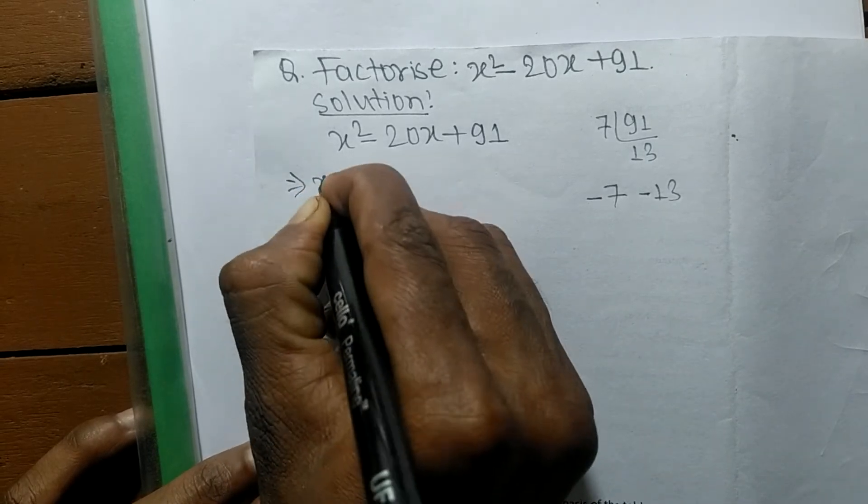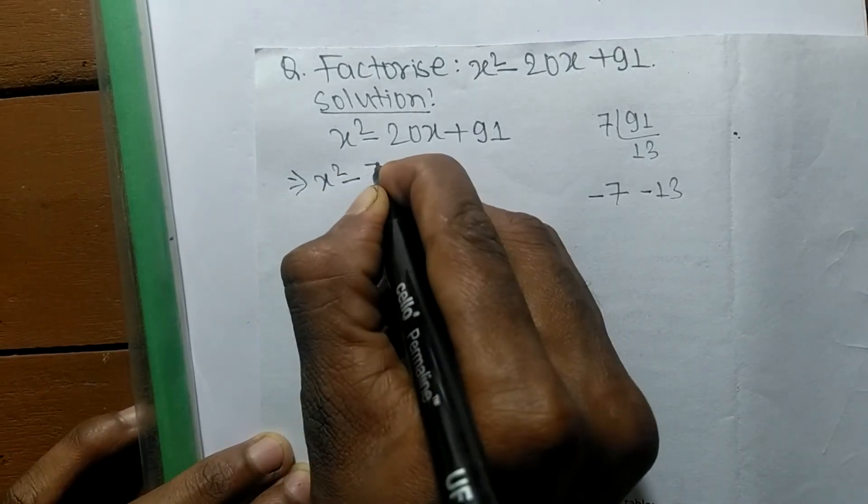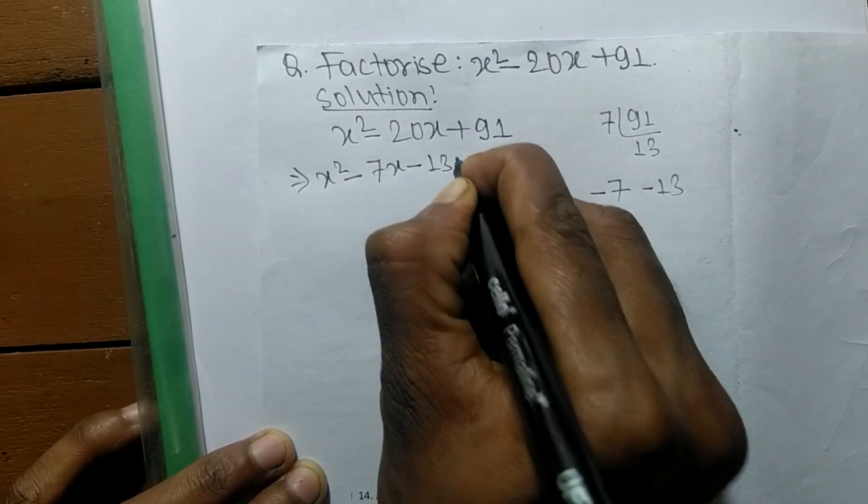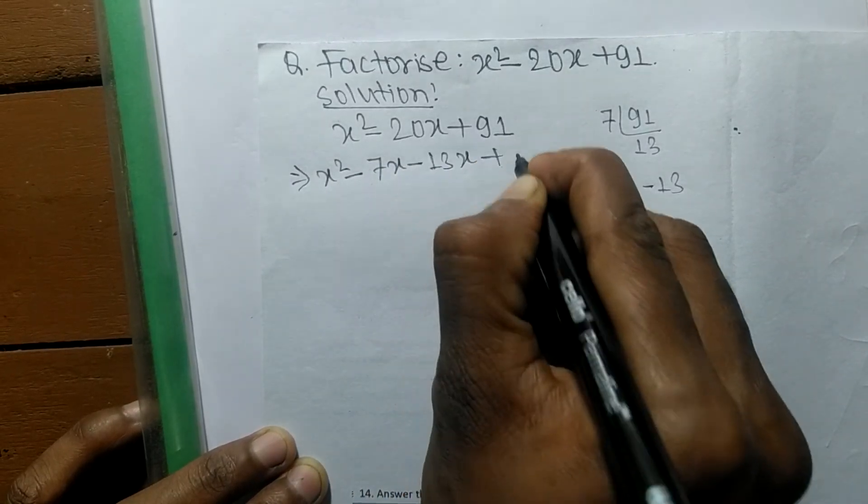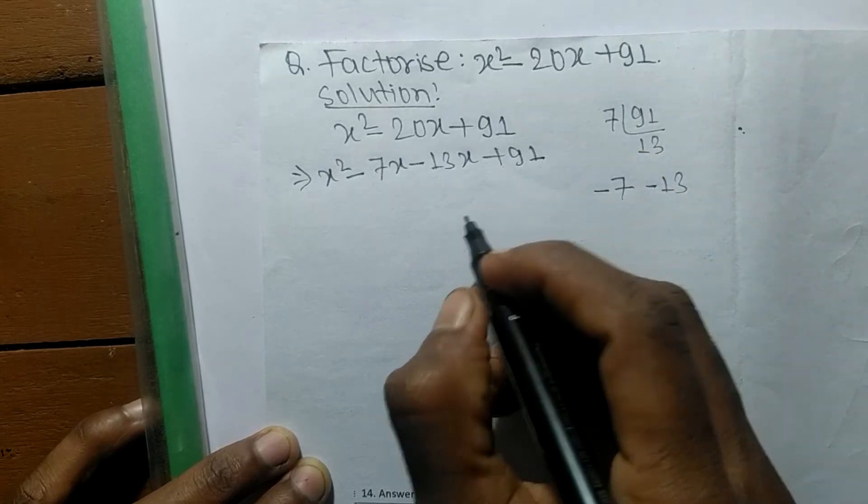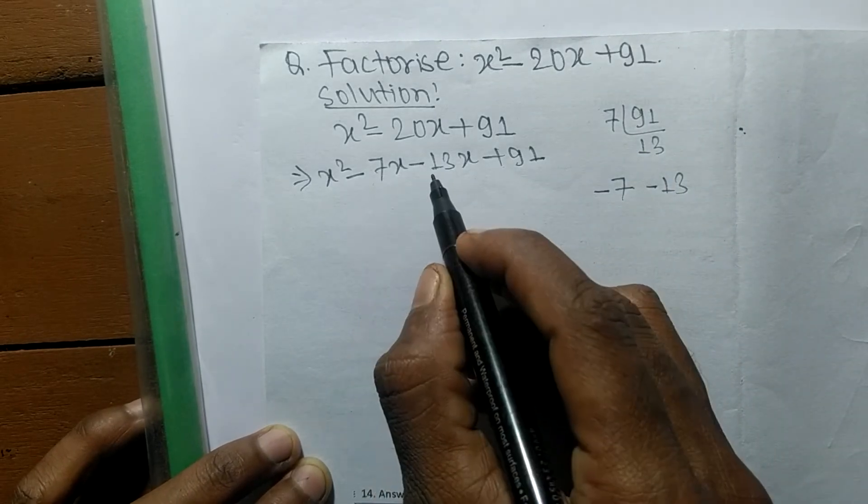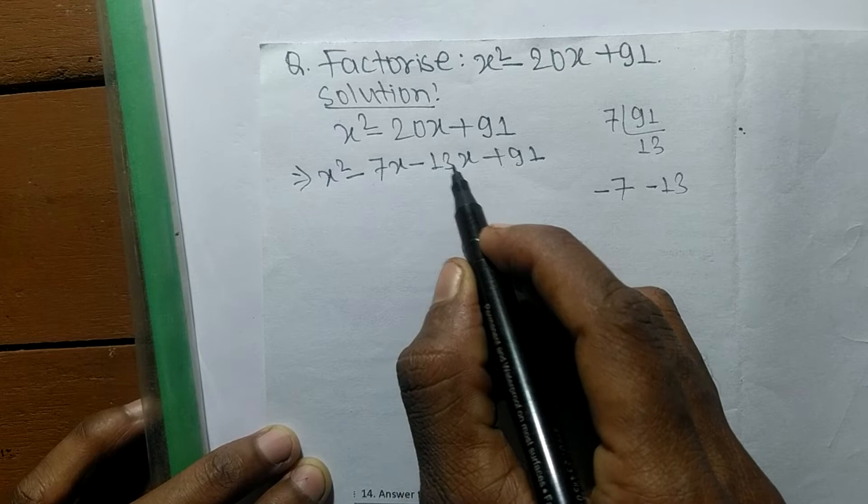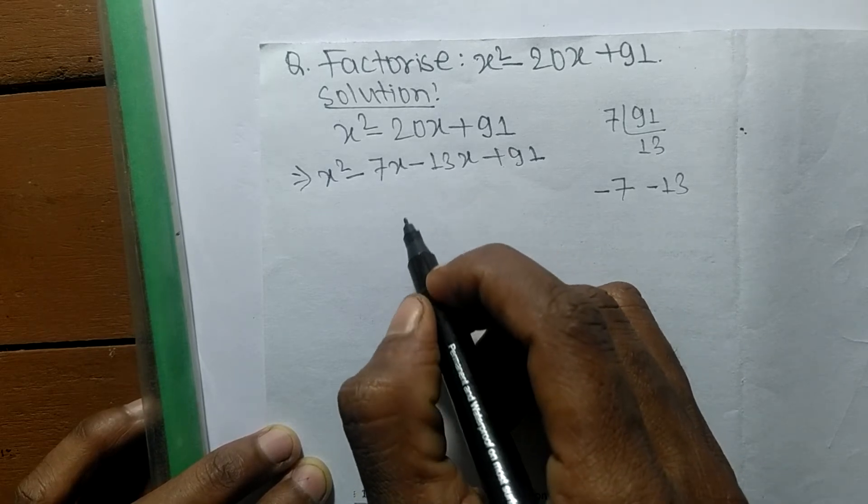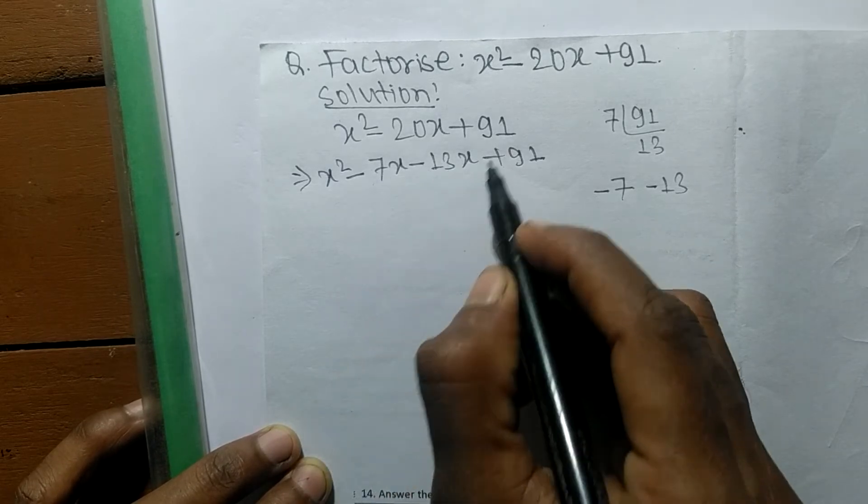So we can write it as x² - 7x - 13x + 91. Minus 7x minus 13x means it is minus 20x, and minus times minus plus 7 times 13 means it is 91.